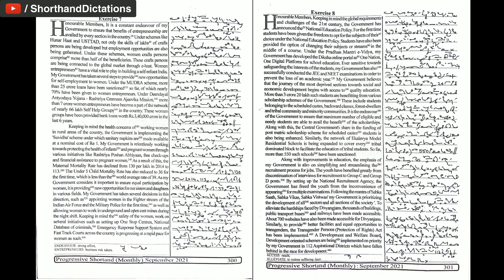My government believes that the journey of the most deprived sections towards social and economic development begins with access to quality education. More than 3 crore 20 lakh such students are benefiting from various scholarship schemes of the government. These include students belonging to the scheduled castes, backward classes, forest dwellers, and tribal community and minority communities.